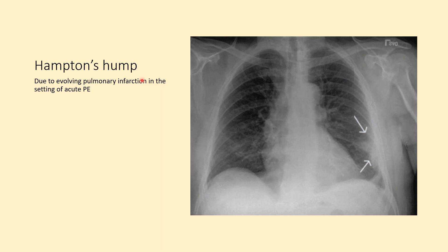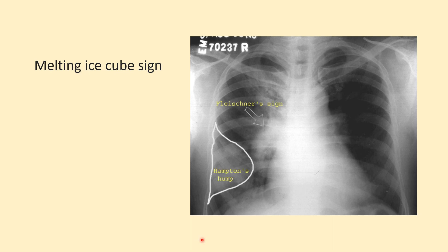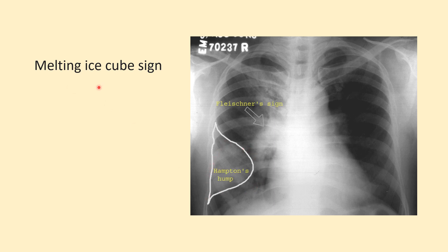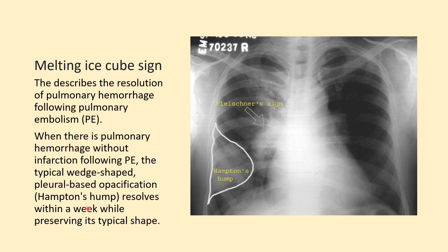Another sign is Hampton's hump, which is a pleural-based opacity due to an evolving pulmonary infarct, as there is decreased blood flow distally. When Hampton's hump is formed due to hemorrhage with no associated infarct, on subsequent X-ray this can disappear within a week. This is known as the melting ice cube sign, which is also suggestive of pulmonary embolism.